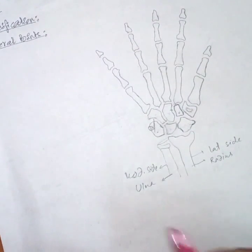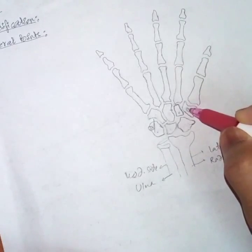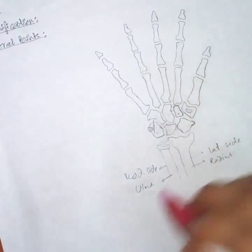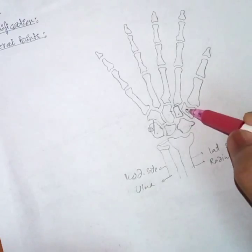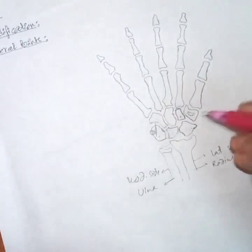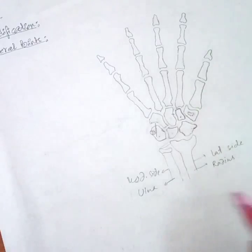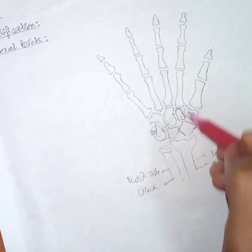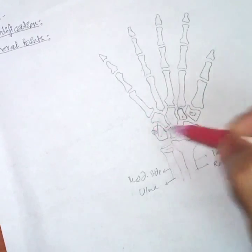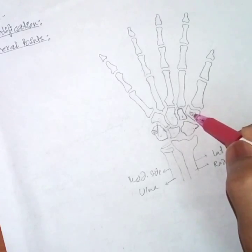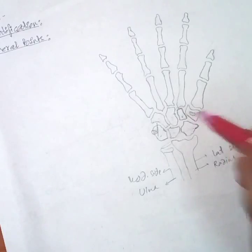The palmar surface of the trapezium has a vertical groove. This vertical groove is for the insertion of the tendon of the flexor carpi radialis. Since this is the radial side, the tendon of the flexor carpi radialis is attached to this vertical groove of the trapezium.